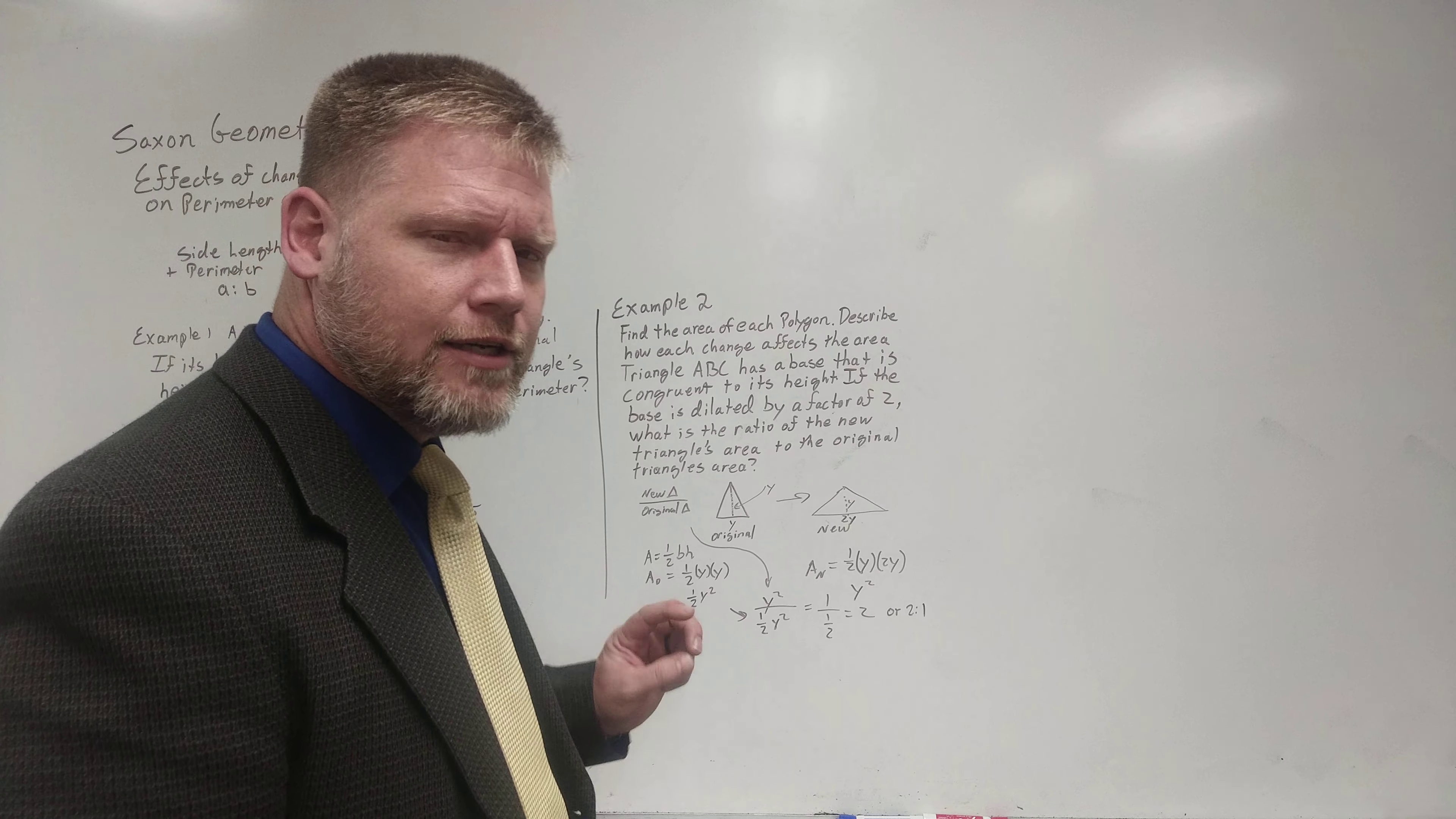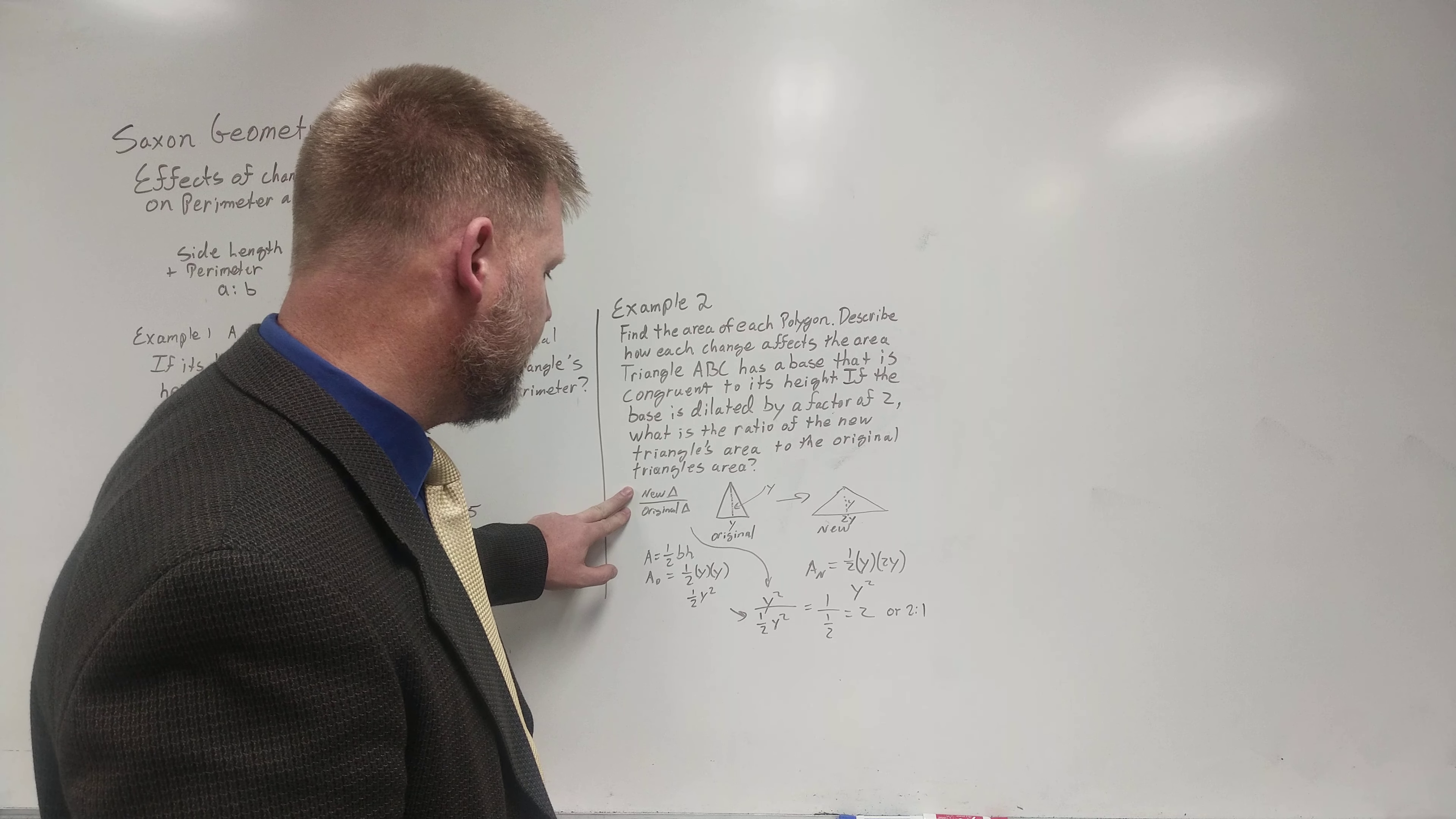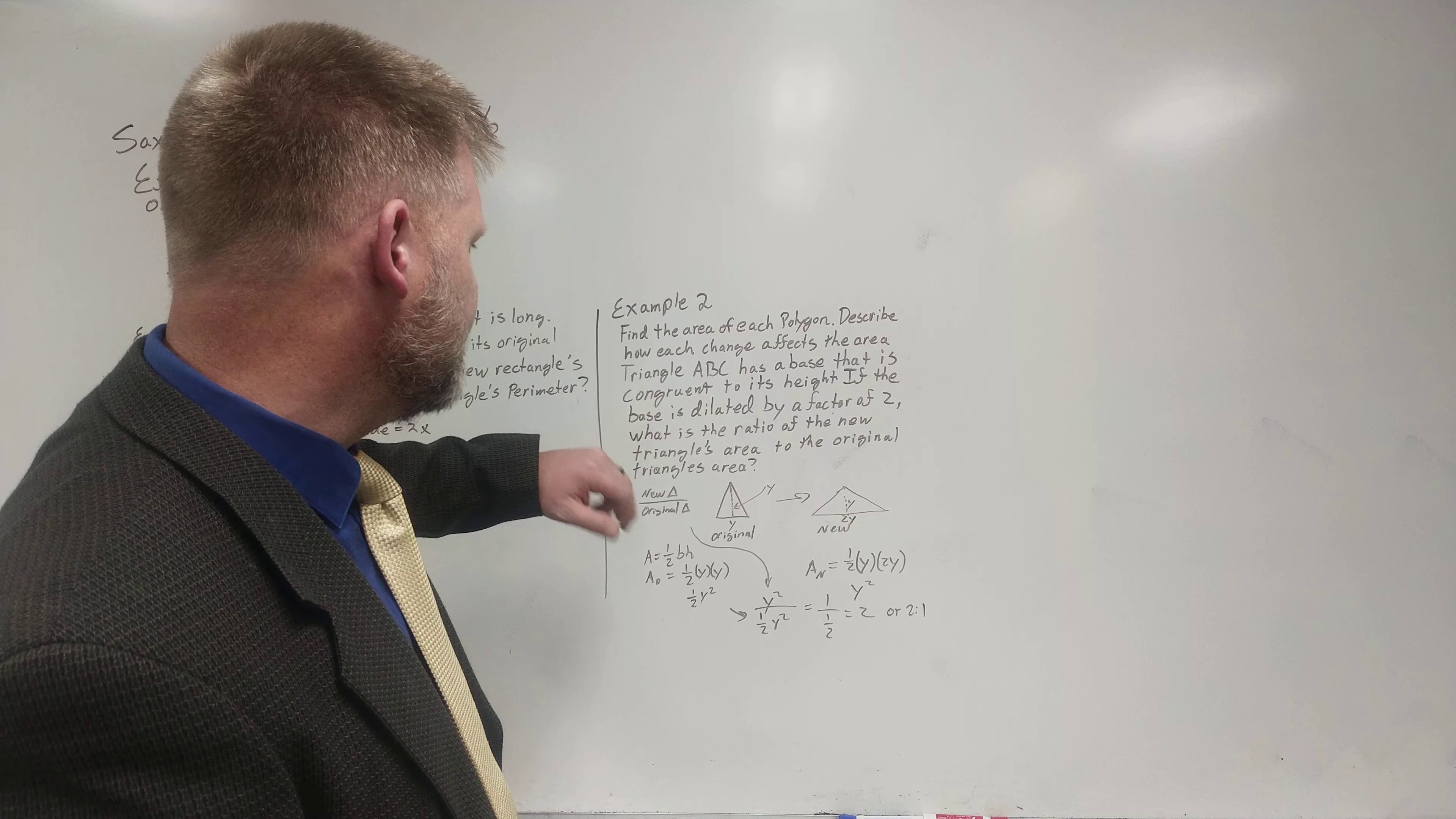Now this one is not difficult when you stop and draw your diagram. So the very first thing I did is I wrote down what they wanted. They wanted the ratio of the new to the original areas. And I know that the area of a triangle is one half base times height.